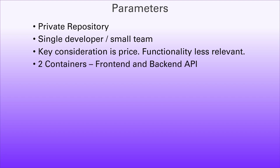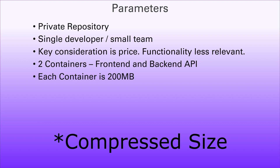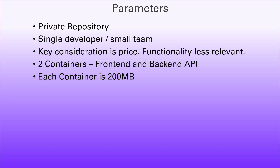For a typical SPA application we have a front end and a back end, so that's two containers. A vanilla Nuxt or SPA application is somewhere between 100 and 200 megabytes, and a vanilla .NET API is just over 200 megabytes. Allowing for some growth and averaging across both containers, 200 megabytes per container is a reasonable ballpark figure.